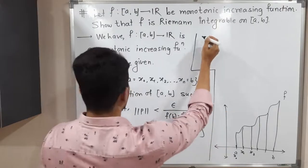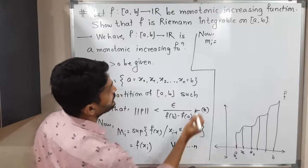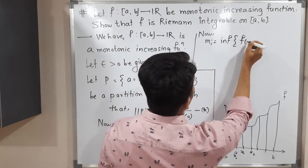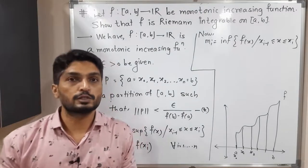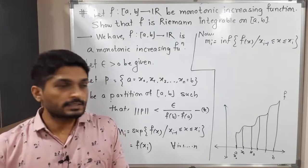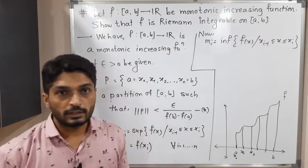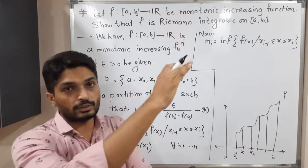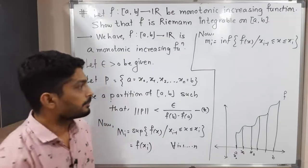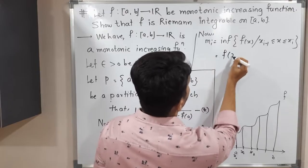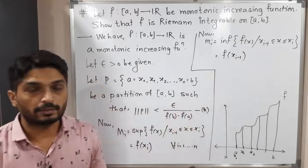Now, small m_i is the infimum of F(x) for x in [x_{i−1}, x_i], for all i from 1 to n — that is, the minimum value of the function on each sub-interval. Since the function is increasing, it attains its minimum value at the left endpoint. So the minimum is at x_{i−1}, meaning small m_i = F(x_{i−1}).